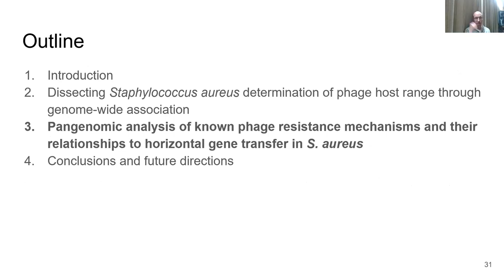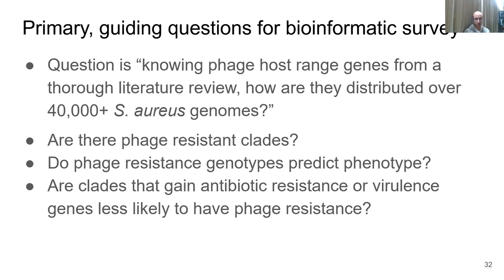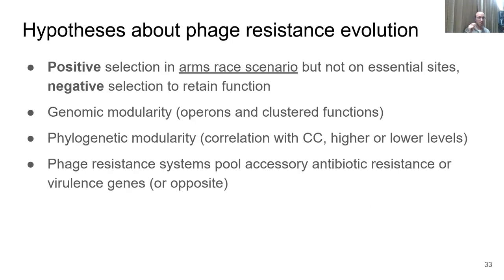From there, I'll go into the retrospective study — a pan-genomic analysis of what has already been discovered regarding phage resistance determinants and whether these predict horizontal gene transfer and measured phage resistance in the species. The main question is: knowing phage host range genes from a thorough literature review, how are these distributed over our database of 40,000 or more curated annotated S. aureus genomes? Are there clades that are more phage resistant? Do phage resistance genotypes predict the phenotype? And do clades with more phage resistance tend to pool antibiotic resistance elements given that transduction is the major horizontal gene transfer mechanism in the species?